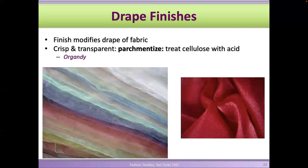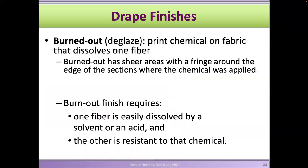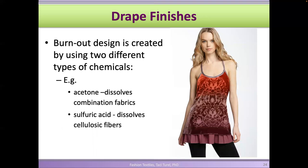We can also do finishes to modify drape. A parchmentizing finish treats cellulosic fabrics with certain acids to create a stiff, crisp look — organdy fabrics are a good example. A burnout finish is more about texture: on a fabric with two different fiber types — say acetate and polyester — applying acetone dissolves the acetate but doesn't affect the polyester.